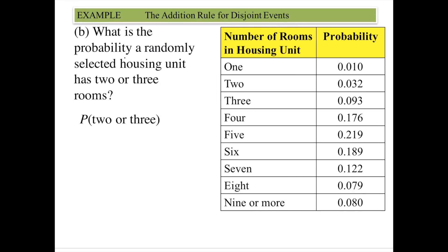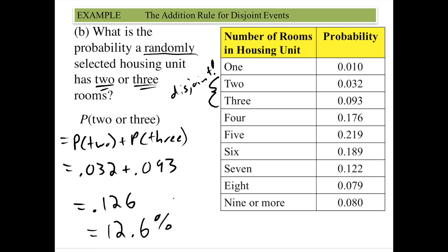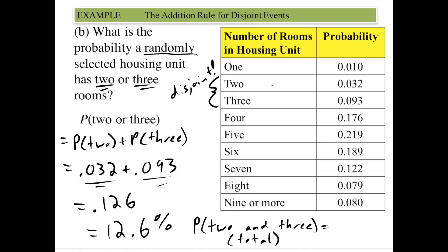They could ask: what is the probability of randomly choosing a housing unit with two or three rooms? These are two outcomes, and all outcomes in the table are disjoint, so we just add the probability of two rooms plus the probability of three rooms, which gives 12.6%. As a reminder, the probability of a unit having both two and three rooms is zero — it's not possible, and we already knew that because these are mutually exclusive events. The probability of any two mutually exclusive events both happening at the same time is always zero.